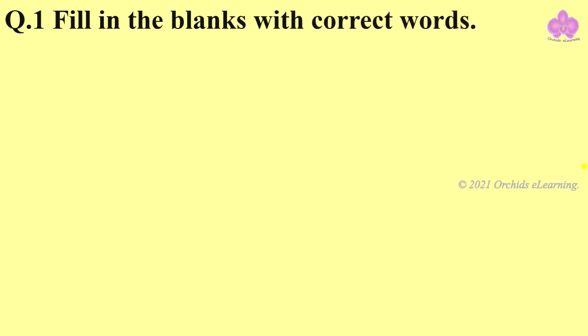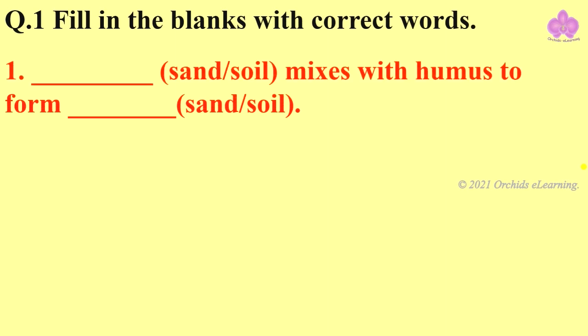Fill in the blanks with correct words. It means you will get two options and you need to choose the correct answer. First, blank mixes with humus to form blank. For the first fill you have options sand and soil, as well as for the second fill. You need to choose the correct option. The correct answer is: sand mixes with humus to form soil.